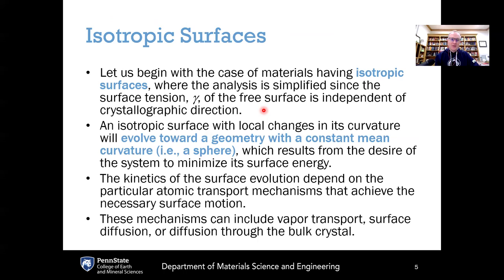The simplest case is an isotropic surface, dealing with morphology just in terms of the external surface of the material — neglecting internal morphology and assuming no directionality. The surface tension gamma is independent of crystallographic direction. An isotropic surface with local changes in curvature will evolve towards a geometry with constant mean curvature, which geometrically is a sphere in three dimensions. A sphere minimizes surface area per unit volume and therefore minimizes surface energy.